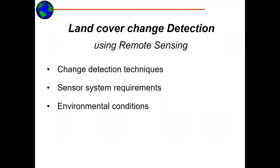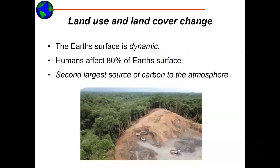Welcome to this lecture about land cover change detection using remote sensing. This lecture is separated into three different parts. First, we're going to talk about different techniques used for detecting changes of the land cover. Secondly, what the requirements are of the data you are using for finding a change in the land cover. And finally, what other environmental conditions can influence your analysis that you need to take care of.